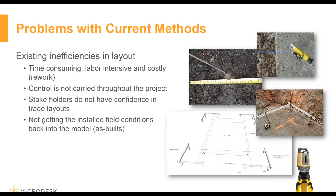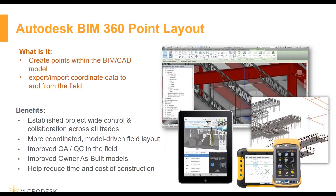When we look at Autodesk BIM 360 Point Layout, this is a tool that ties into a handful of different programs. The screenshot shown here is with Revit, but it also works inside AutoCAD as well as Navisworks. There's also a specific iPad app that works for the layout portion, and that can either work with or replace those specific devices that work with the robots. The benefit is that it makes things a lot easier to coordinate, establishing a project-wide control so everything from one side of the building to the other works off a consistent coordinate point — and because we're using lasers, it tends to be very accurate.